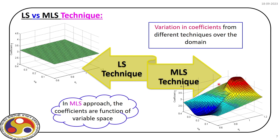Because of this variation of coefficients, we get a better estimation of the reliability index and probability of failure when using the MLS technique, where the coefficient varies as we move over the domain.